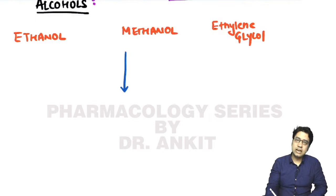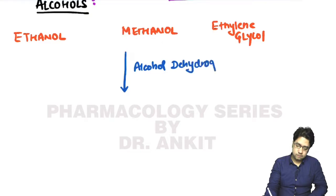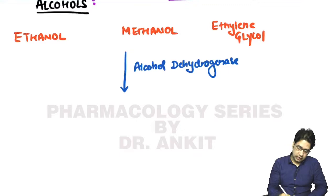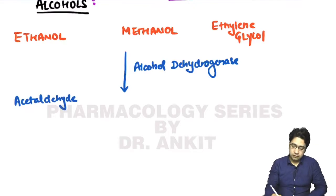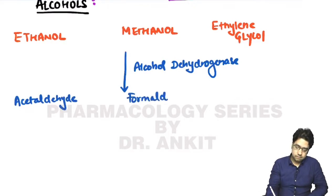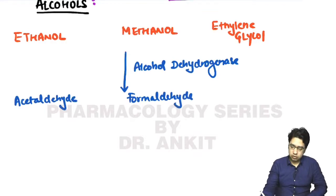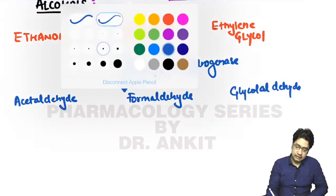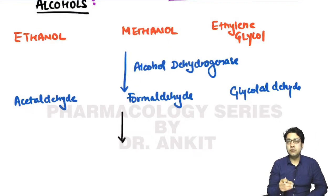When we give ethanol, methanol, or ethylene glycol, the enzyme which acts upon them first is alcohol dehydrogenase. This alcohol dehydrogenase converts these respective alcohols into their respective aldehydes: ethanol is converted into acetaldehyde, methanol into formaldehyde, and ethylene glycol into glycolaldehyde.